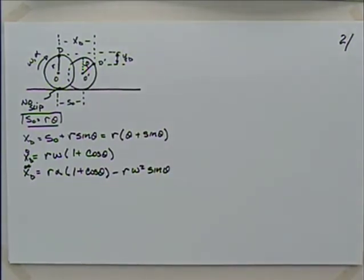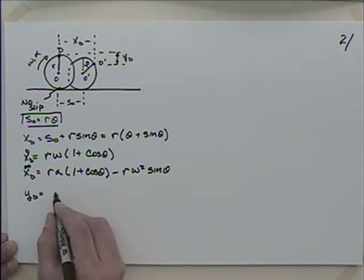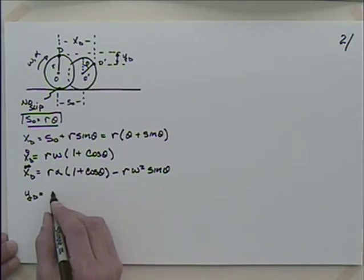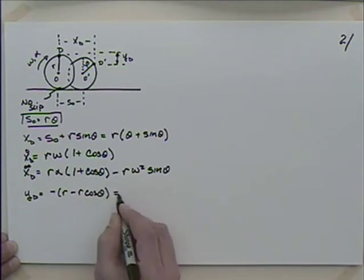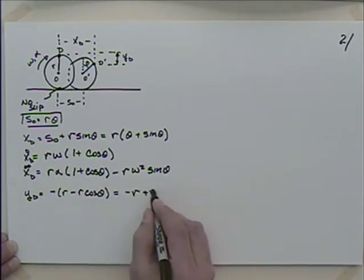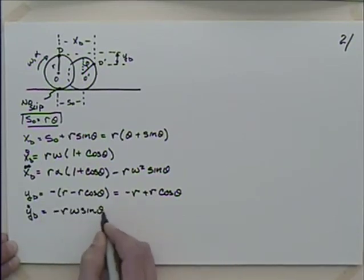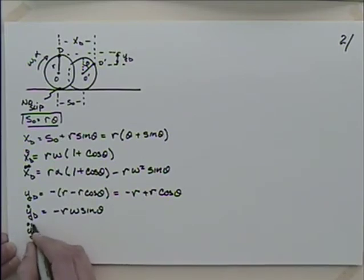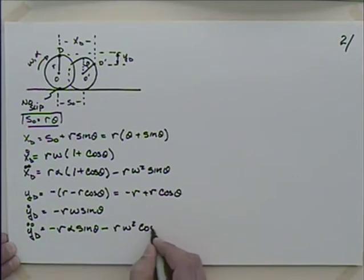The second derivative of X_D is R*alpha*(1 + cos theta) minus R*omega^2*sin(theta). For Y_sub_D, point D drops down, so Y_D = negative R minus R*cos(theta), which is really minus R plus R*cos(theta). The first derivative is minus R*omega*sin(theta). The second derivative is minus R*alpha*sin(theta) minus R*omega^2*cos(theta).